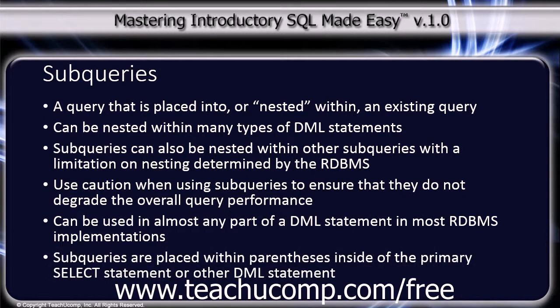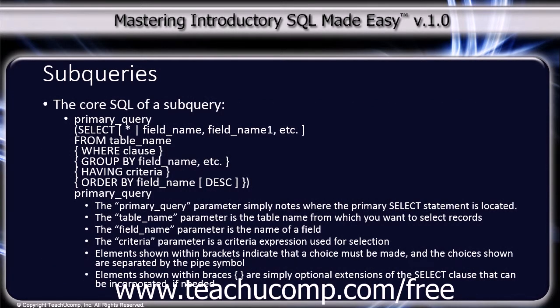Subqueries are placed within parentheses inside of the main SELECT statement. The core SQL of a subquery is shown below. The primary query parameter simply notes where the primary SELECT statement or other DML statement is located. Note that the table name parameter is the name of the table from which you want to select the records, the field name parameter is the name of a field, and criteria is a criteria expression used for selection. Elements shown within brackets indicate that a choice must be made, and the choices are shown separated by the pipe symbol.